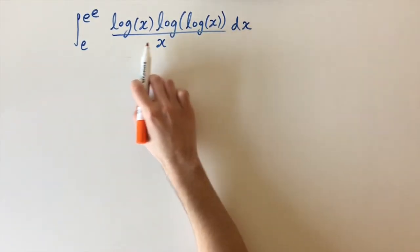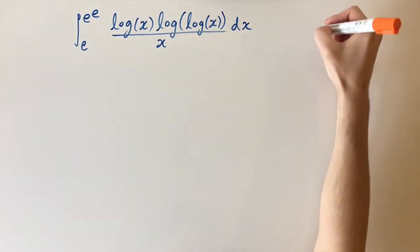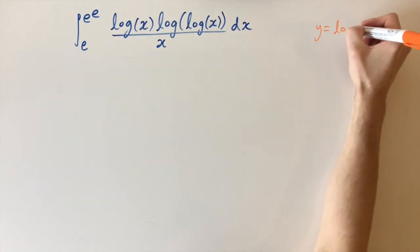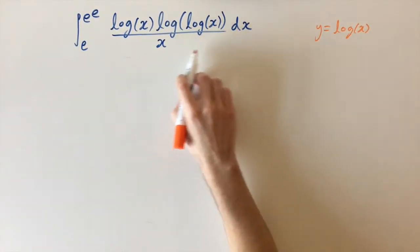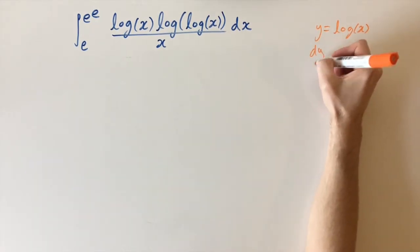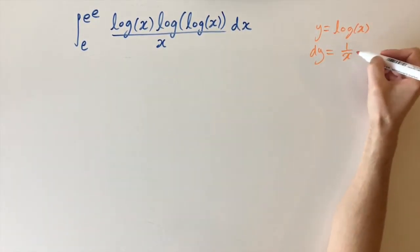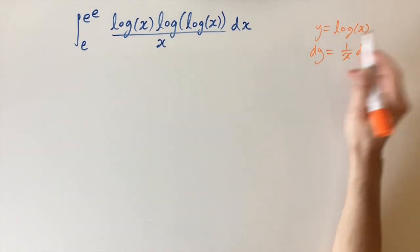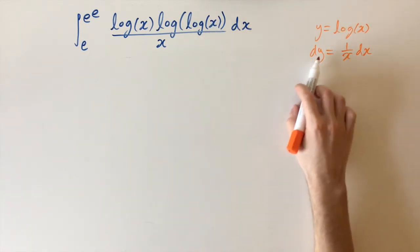1 over x is the derivative of log x. So if we use the substitution y equals log x, then the 1 over x term is going to cancel. We get dy equals 1 over x times dx, the derivative of log x. So we can just replace dx over x by dy.